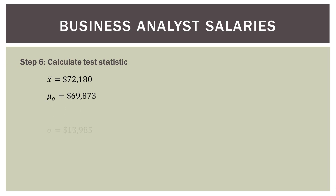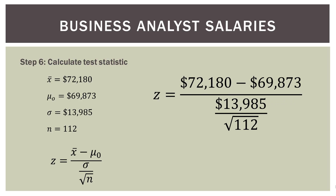Let's calculate our test statistic. Our mean salary for current salaries is $72,180. Our hypothesized mean was $69,873, our sigma was $13,985, and our sample size is 112. We insert those numbers into our Z formula: 72,180 minus 69,873, divided by sigma divided by the square root of N. That gives us a Z value equal to 1.75.